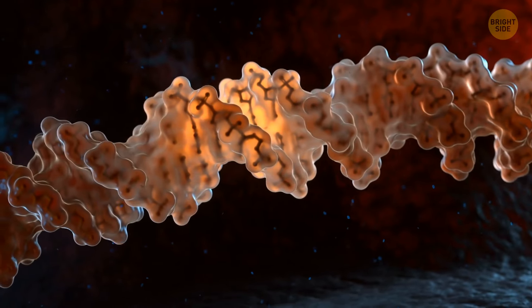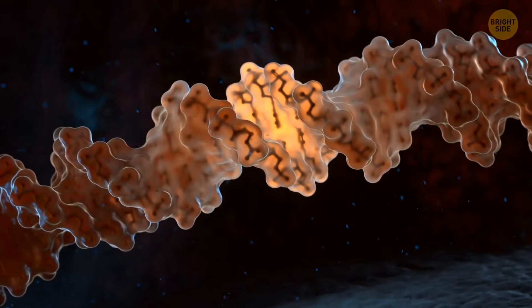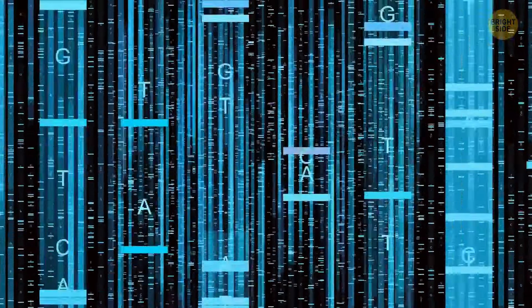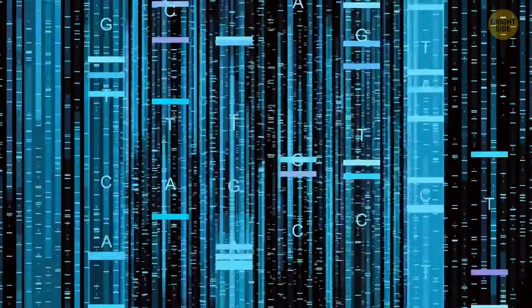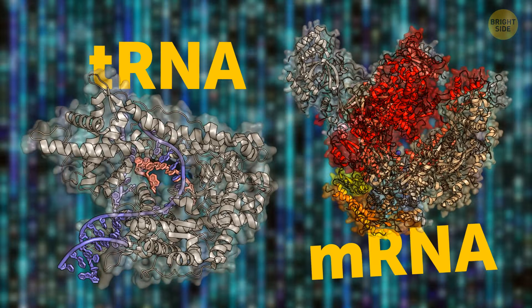All living things share a special code called DNA, the genetic code. It's one of the oldest and most important things about life, and we think this code existed in the very first forms of life too. This code is quite tricky. It involves putting the right building blocks, amino acids, together in the right order, and there are special molecules called tRNA and mRNA that help with this process.